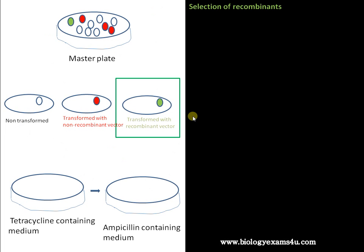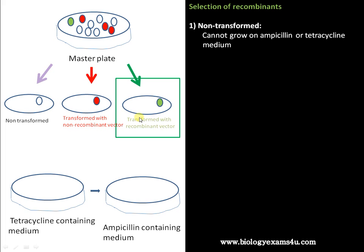Now let us look into how this helps in the selection of recombinant colonies. This is a master plate. After the transformation experiment, we will be getting three types of colonies: first is the non-transformed one without our vector, second is the transformed with non-recombinant vector, and the third is transformed with recombinant vector. We need to select the transformed with recombinant vector from all these colonies, and the majority will be non-transformed.